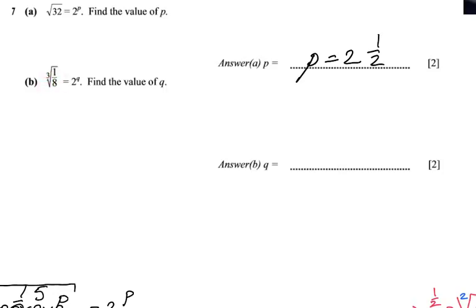Next question: the cube root of 1 over 8 equals 2 to the power q — find the value of q. It's a similar question to what we just did. I can only find the value of q if I rewrite this term with a base of 2, so that 2 to the power something equals 2 to the power q, and then q equals that index.